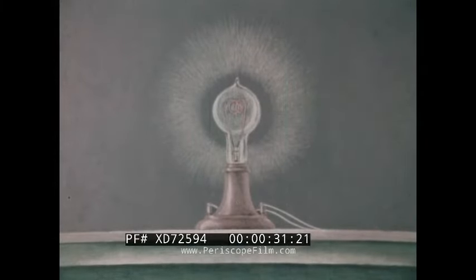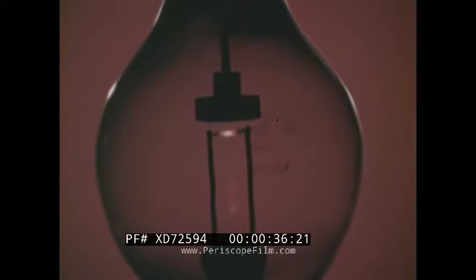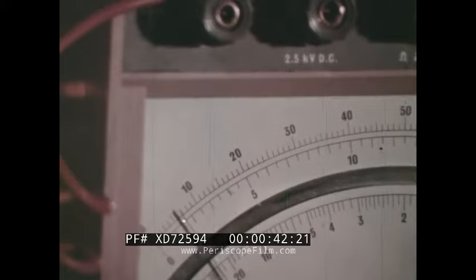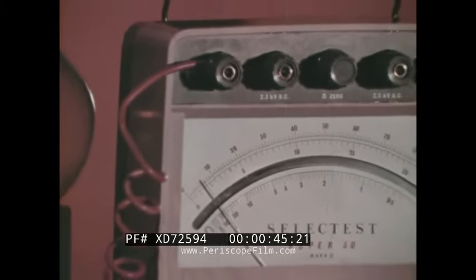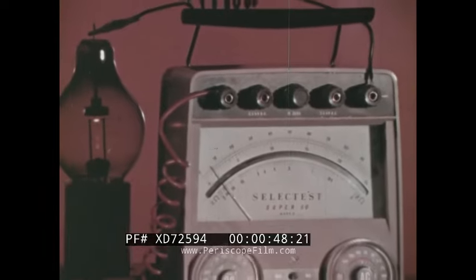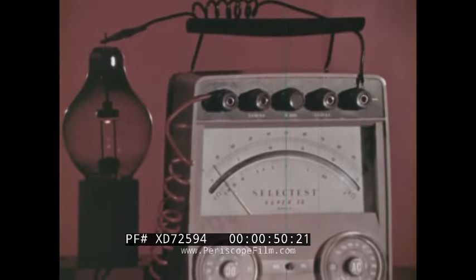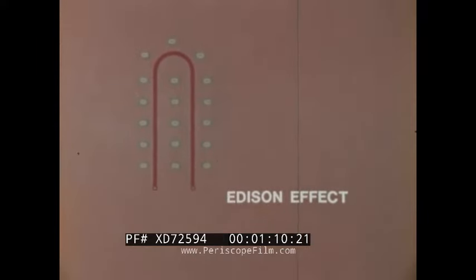In 1885, Thomas Edison was experimenting with the electric light bulb he had invented six years earlier and discovered that a metal wire placed inside the bulb and near the hot glowing filament produced a current flowing from the filament to the wire. Experimenters found out later that if metal is heated to incandescence — until it glows — electrons escape from the metal. These electrons form a negatively charged cloud around the filament called a space charge. This is today known as thermionic emission, or the discharge of electrons due to heat.